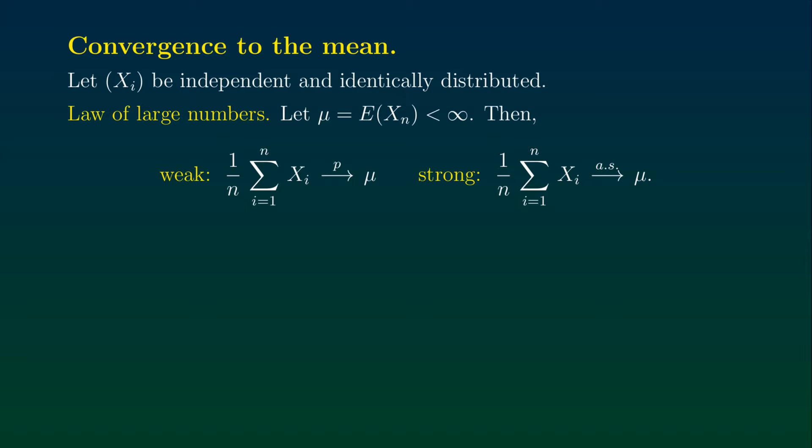While the strong law of large numbers tells us that we have the same convergence, but in fact almost surely. And indeed in a previous video, we proved that convergence almost surely implies convergence in probability. So indeed, the weak law of large numbers is indeed a weaker result than the strong law of large numbers.